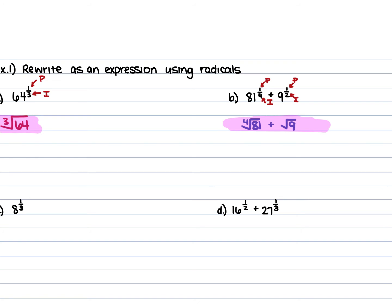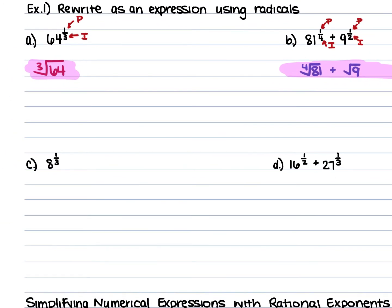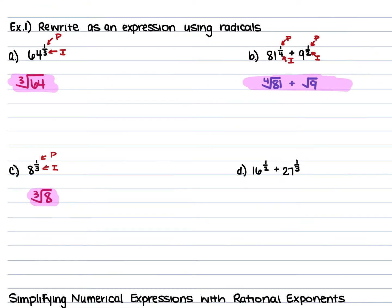For example c, we have 8 to the power of one-third. The 1 is your power and the 3 is your index, so we're taking the cube root of 8. We leave it as the cube root of 8 because it's not telling us to simplify. For example d, we have 16 to the power of one-half plus 27 to the power of one-third, so this gives us the square root of 16 plus the cube root of 27.